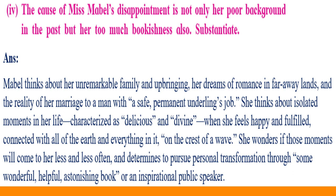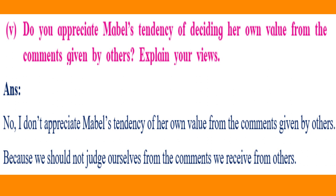Next activity: The cause of Miss Mabel's disappointment is not only her poor background in the past but her too much bookishness also. Answer: Mabel thinks about her unremarkable family and upbringing, her dreams of romance in far-away lands, and the reality of her marriage to a man with a safe, permanent, underlying job. She thinks about isolated moments in her life she characterizes as delicious and divine — when she feels happy and fulfilled, connected with all of the earth and everything in it. She wonders if those moments will come less and less, and determines to pursue personal transformation through some wonderful, helpful, astonishing book or inspirational public speaker.